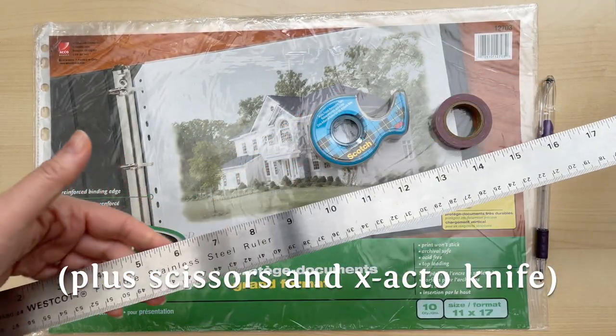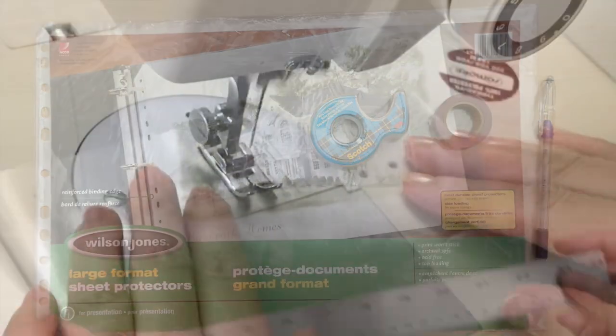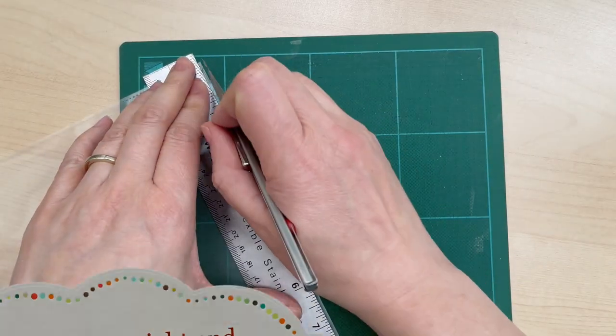And I'm also using a large ruler and the one I'm using is 24 inches long. And lastly you'll need a sewing machine.